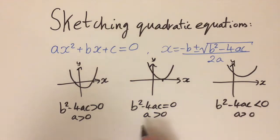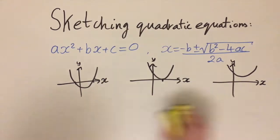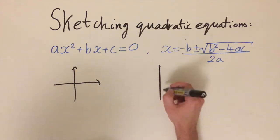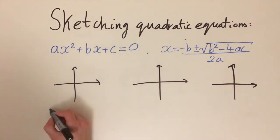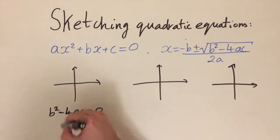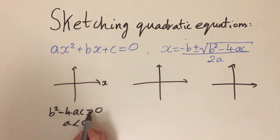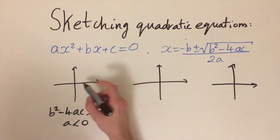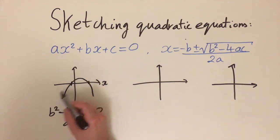Now we look at the corresponding cases when a is negative — we get the same graphs but flipped over. If the discriminant is positive and a is negative, the shape goes downwards with ends going to negative infinity. Using the same logic, the discriminant being positive gives two different solutions, so the parabola crosses the x-axis twice.